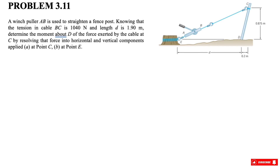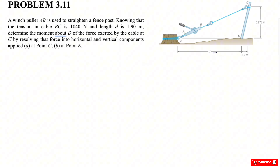Welcome back. In today's question we're solving a problem from chapter three in Johnson's textbook, requested by one of you. We have a winch puller AB used to straighten a fence post. The tension in cable PC is 1040 newtons and the length d is 1.9 meters. We need to determine the moment of the force exerted by the cable at C about point D, resolving the force into horizontal and vertical components.